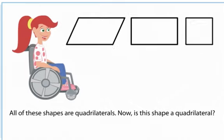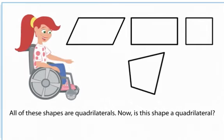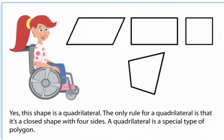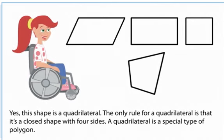All of these shapes are quadrilaterals. Now, is this shape a quadrilateral? Yes, this shape is a quadrilateral. The only rule for a quadrilateral is that it's a closed shape with four sides. A quadrilateral is a special type of polygon.